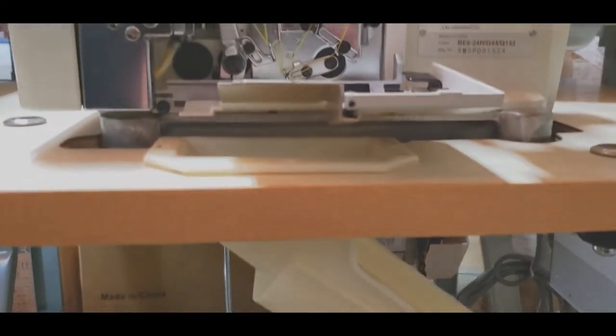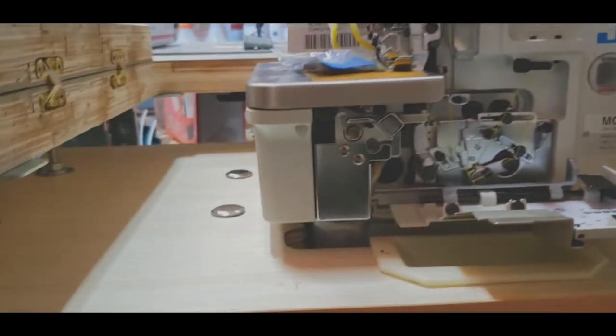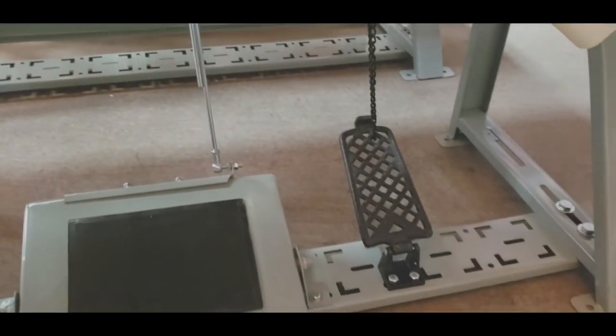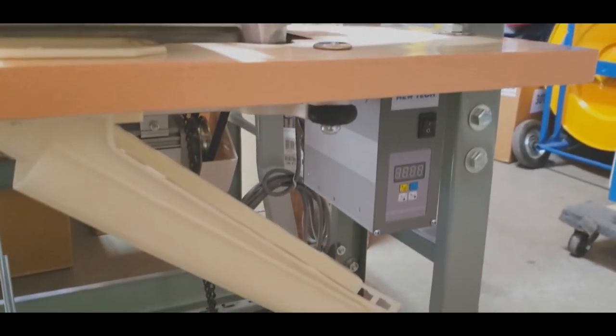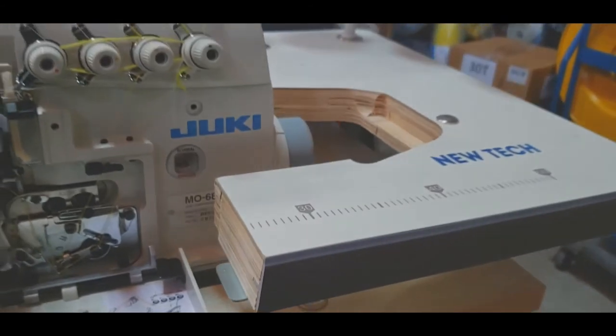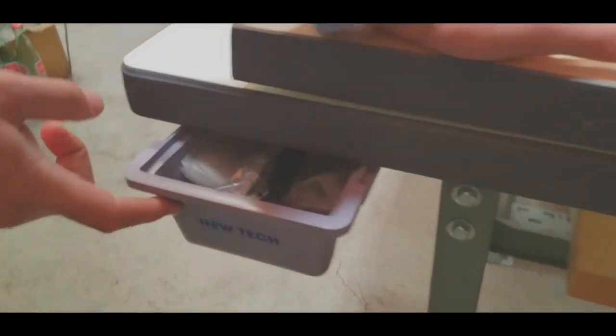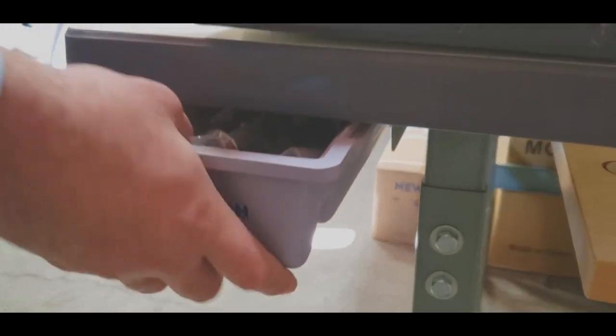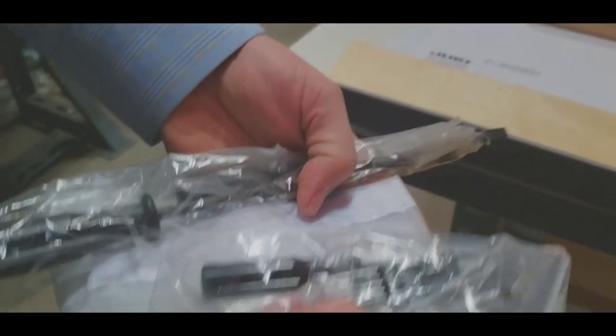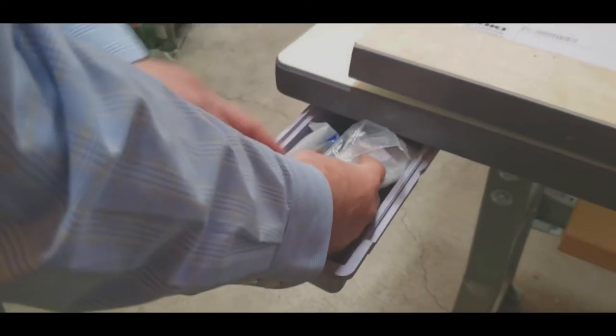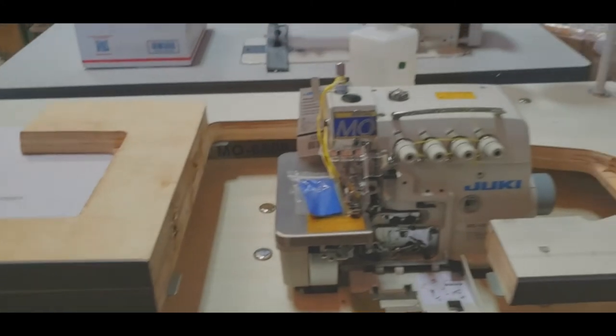By the way, Juki does not make any legs or table or motor. Juki only makes the machine. People sometimes come and say, 'Hey, I ordered a Juki machine, how come it's New-Tech on the table?' New-Tech makes tables, New-Tech makes motors, New-Tech makes a lot of accessories. Everything goes inside here and these are all the accessories that you have: needle, screwdriver, all the stuff.